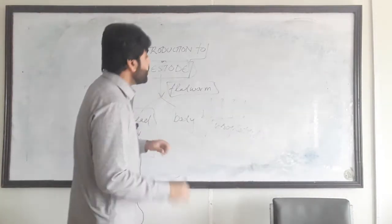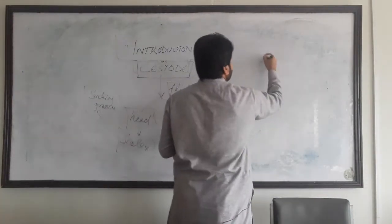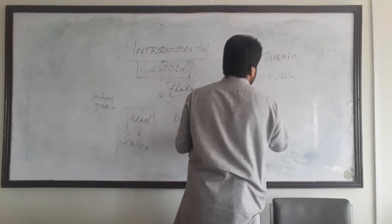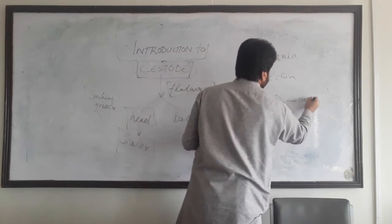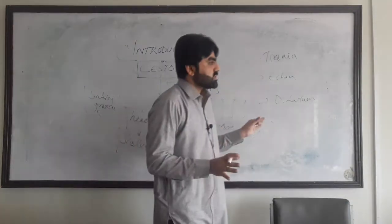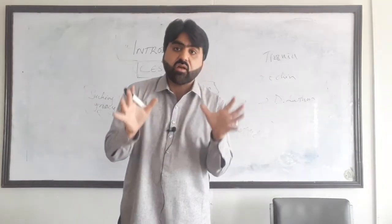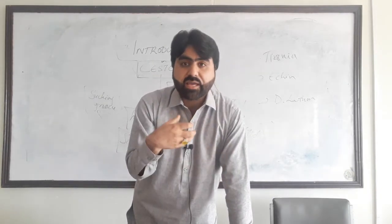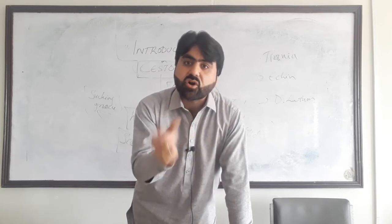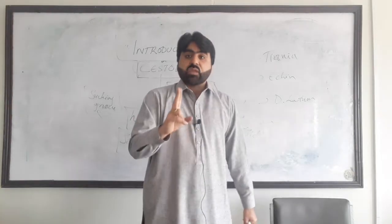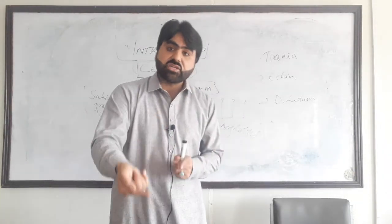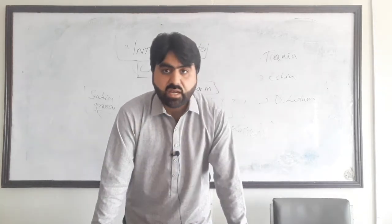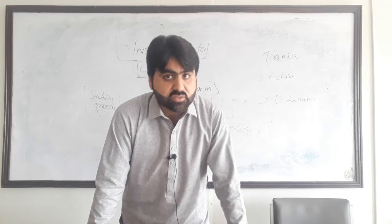We will discuss four important cestodes in upcoming lectures: Taenia, Echinococcus granulosus, Diphyllobothrium latum, and one other. These cestodes are usually transmitted to human beings by ingestion of larvae present in the undercooked meat of the intermediate host. However, there are two important exceptions transmitted by ingestion of eggs: Taenia solium and Echinococcus granulosus — these will be discussed in their respective lectures.